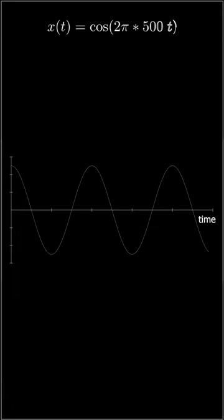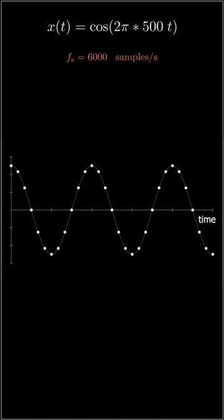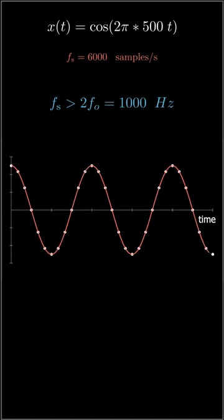If we have a sinusoidal signal with fundamental frequency of 500 Hz and sampled with a sampling rate of 6000 samples per second, since the sampling rate is higher than the Nyquist rate which is 2 times the fundamental frequency, we can reconstruct the baseband signal perfectly from its samples.